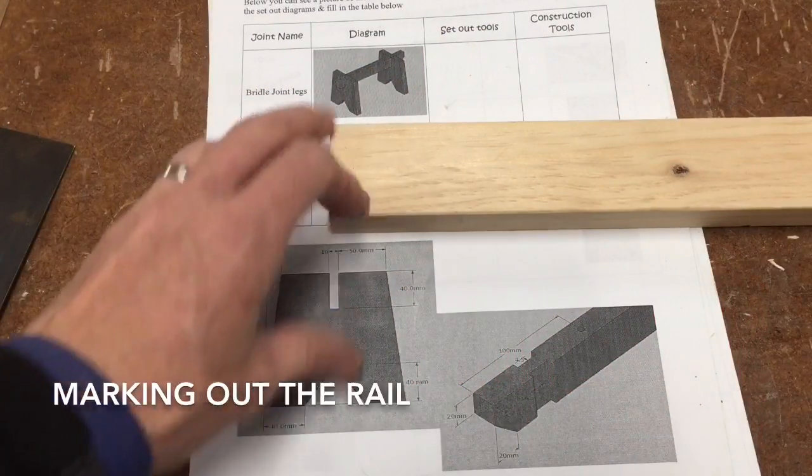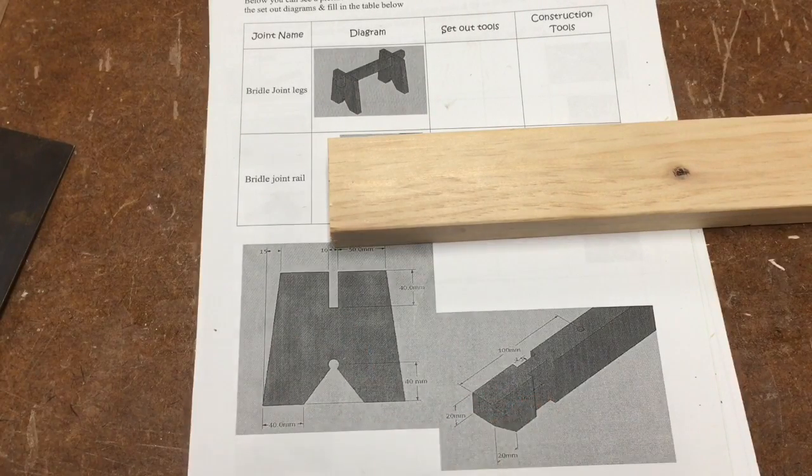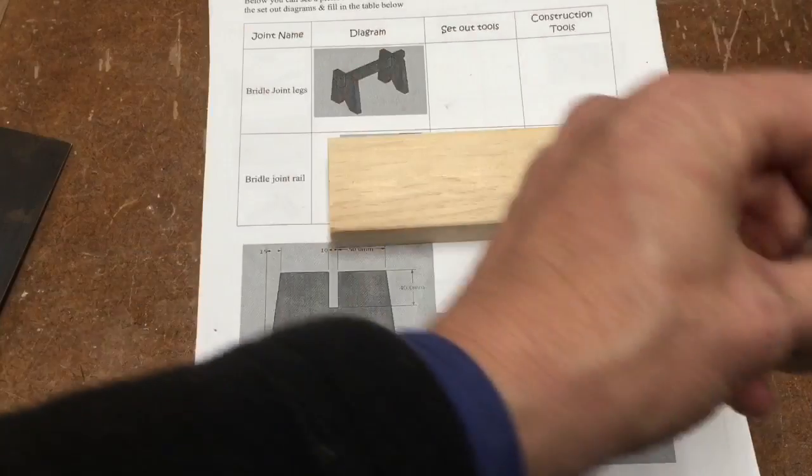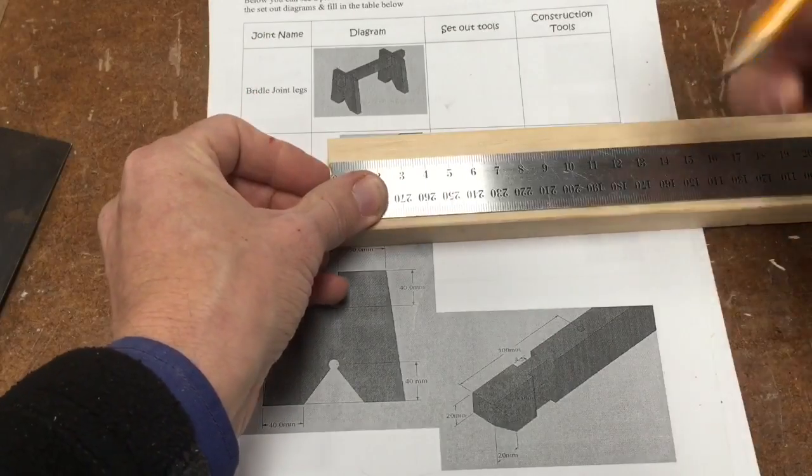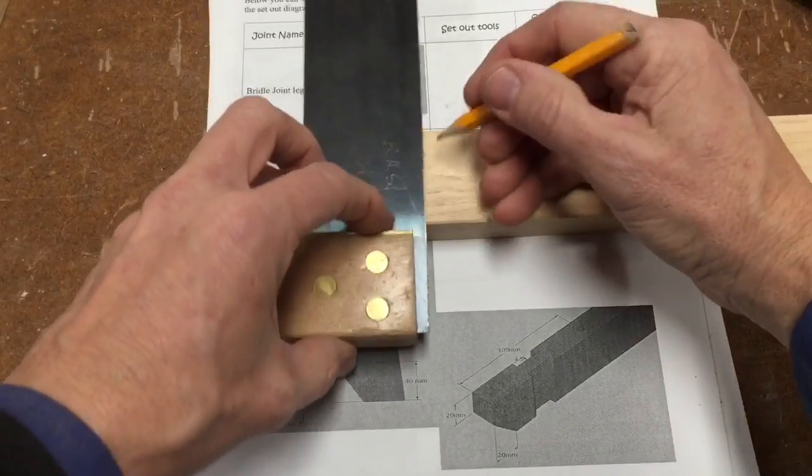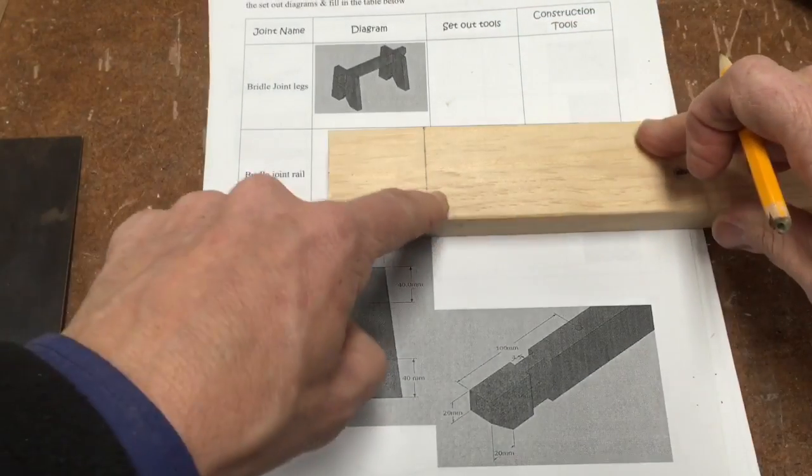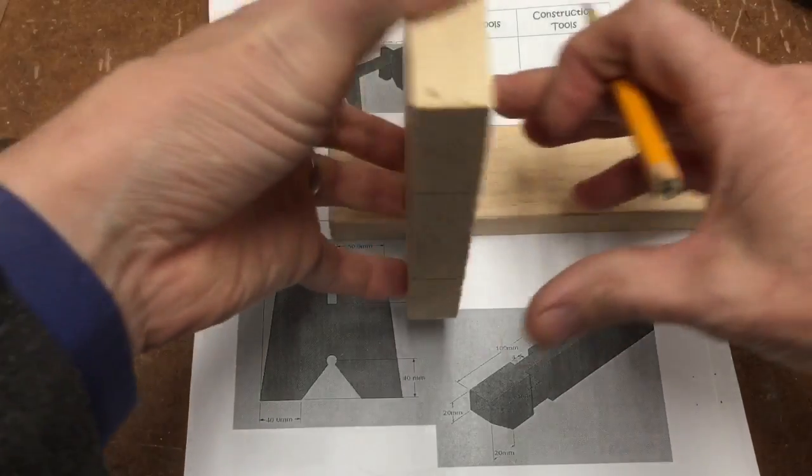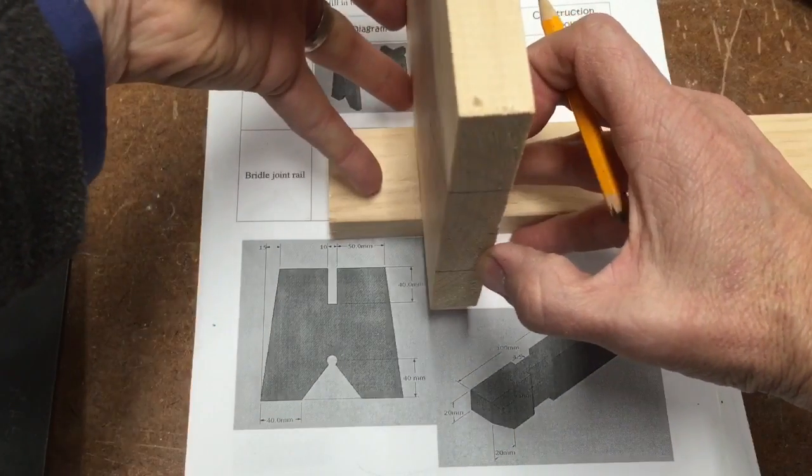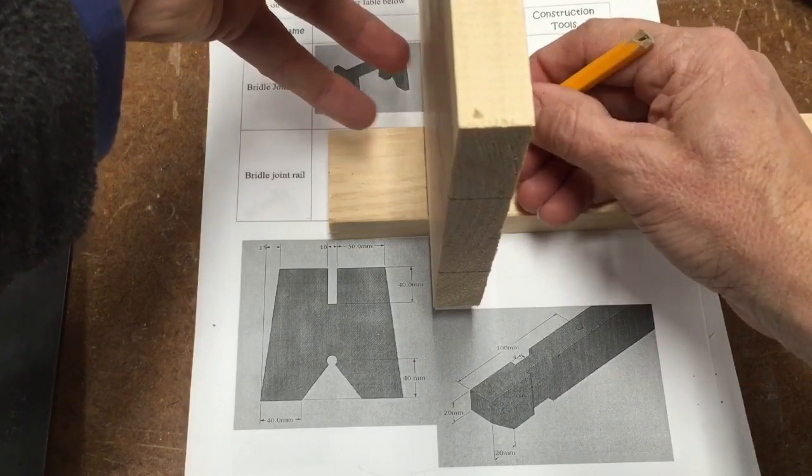Marking up the joint on the rail or bridle joint section, we need to come back 40 mil from the end of the job. I mark 40 and square that line. The width of the joint is the thickness of my timber, so I align my timber up with my pencil line and put a little mark on the opposite side.